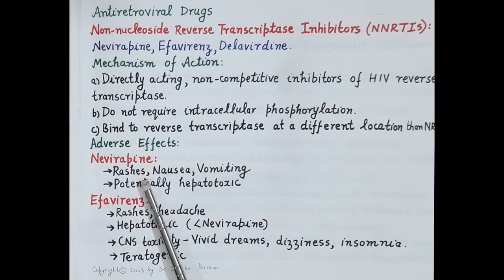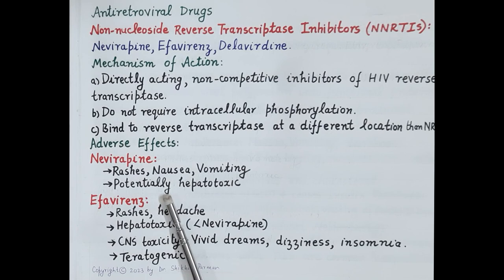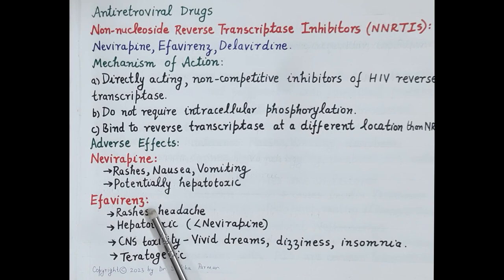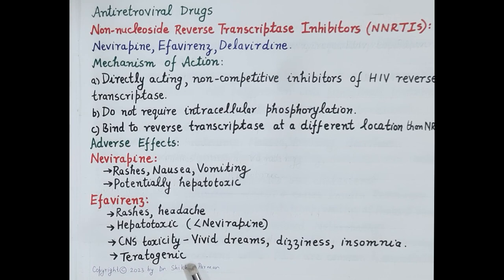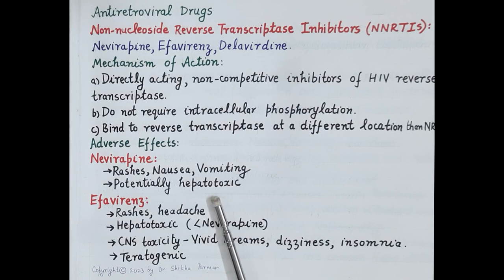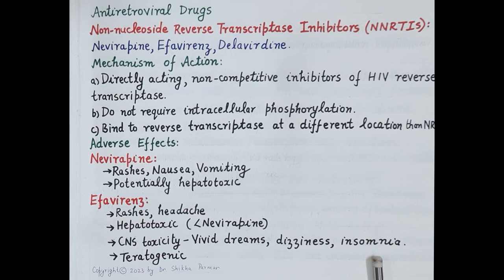Adverse effects of nevirapine include rashes (the most common) followed by nausea and vomiting. Importantly, nevirapine is potentially hepatotoxic — this must be remembered. Adverse effects of efavirenz include rashes, headache, and it is also hepatotoxic but less so than nevirapine. Efavirenz is associated with CNS toxicity including vivid or unusual dreams, dizziness, and insomnia. Efavirenz is also teratogenic and should not be given in pregnancy.